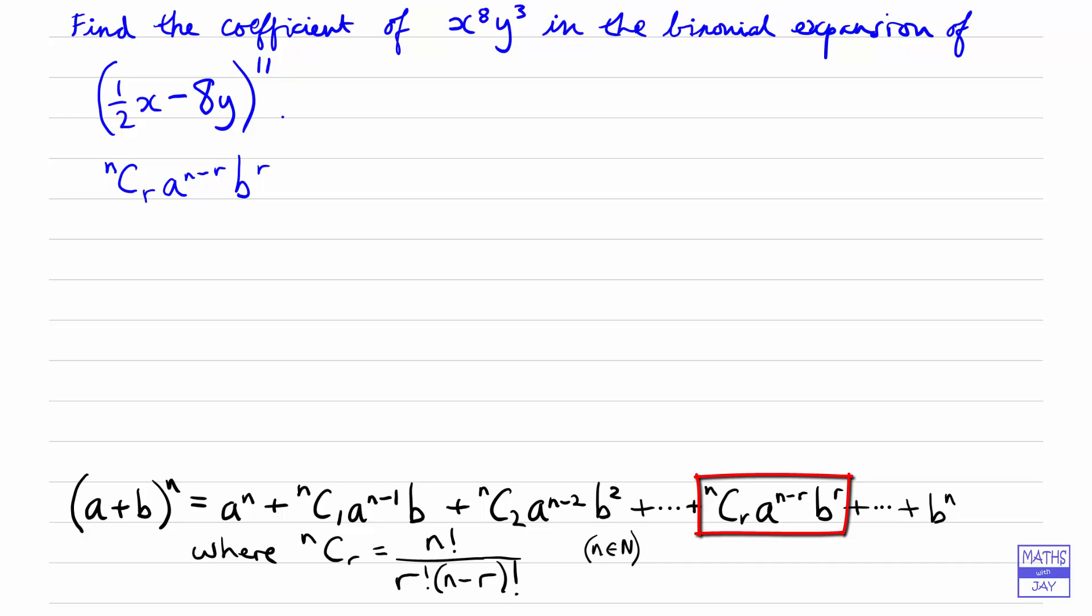Now we just need to write down what n, r, a and b are. n is the power, so that's 11. We'll come back to r in a moment. Let's first write down a, which is a half x, and b will be the minus 8y.